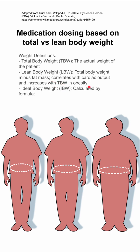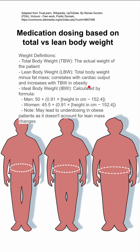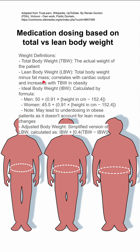Your ideal body weight is calculated using this formula. This may lead to underdosing in obese patients because it doesn't account for lean mass changes. Your lean mass changes in obesity beyond just your fat mass — there are other components like blood vessels and blood that might increase as well.